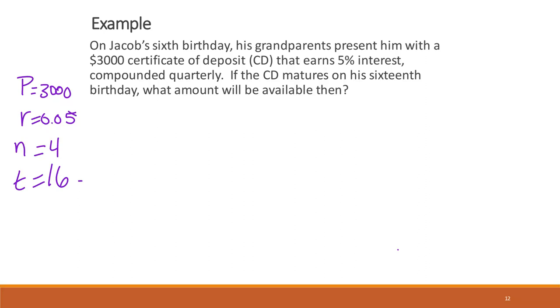Not quite, right? That t is not right. We're told they do this on his 6th birthday, and it matures on his 16th birthday. So our t is actually 16 minus 6. So that's 10 years that that's going to be in the account. So pay close attention to little things like that.